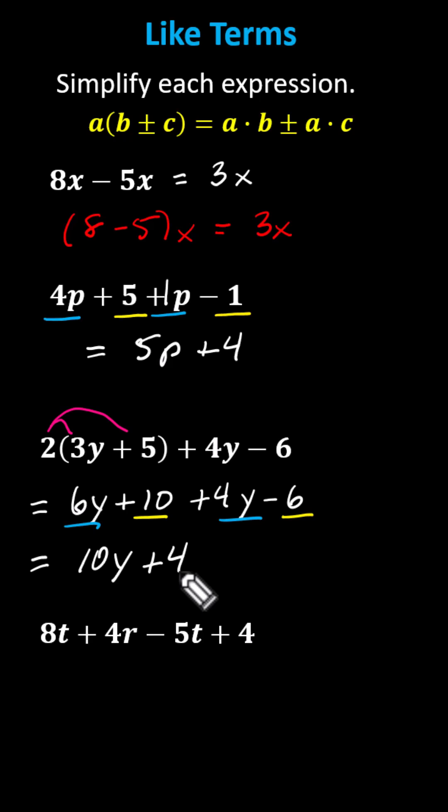And for the last expression, we have 8t plus 4r minus 5t plus 4. This expression only has 2 like terms, the 2t terms. There's only 1r term and 1 constant. And 8t minus 5t equals 3t. The expression simplifies to 3t plus 4r plus 4. I hope you found this helpful.